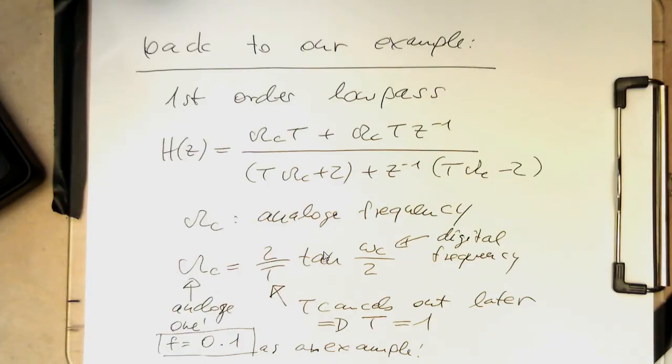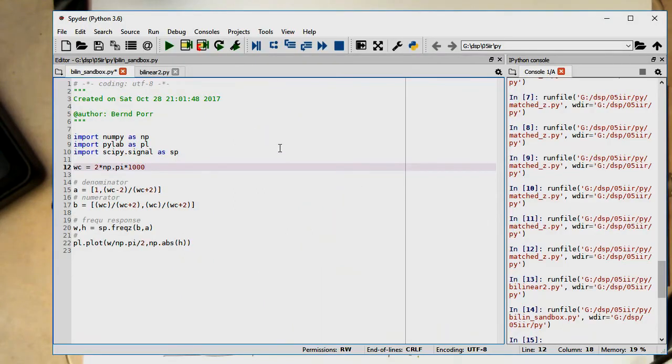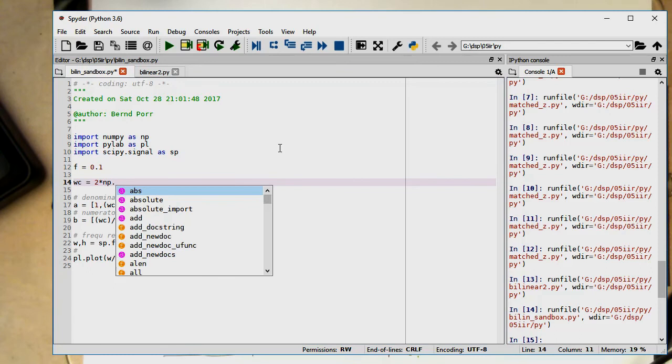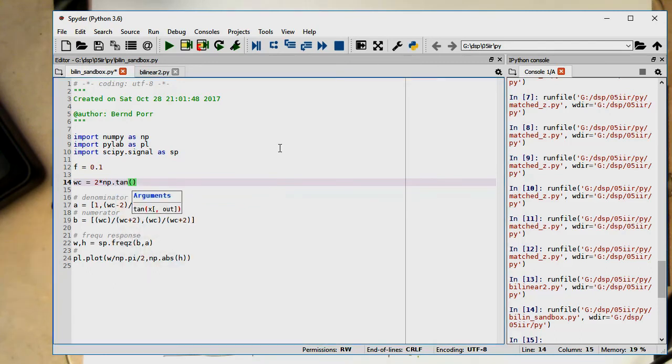We're generating this with two times tangent of omega c divided by 2. That's our digital frequency here. What we do is we're defining our cutoff frequency as 0.1. Now we say two times tangent of omega c digital divided by 2.